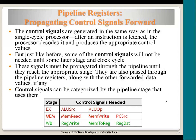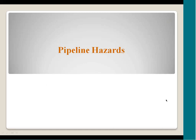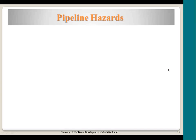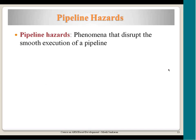Having more stages in the pipeline is not all good — there are some issues associated with it that need to be handled. These are called pipeline hazards — phenomena that disturb the smooth execution of a pipeline. Something which disturbs the smooth flow of instructions into the pipeline is called a pipeline hazard.